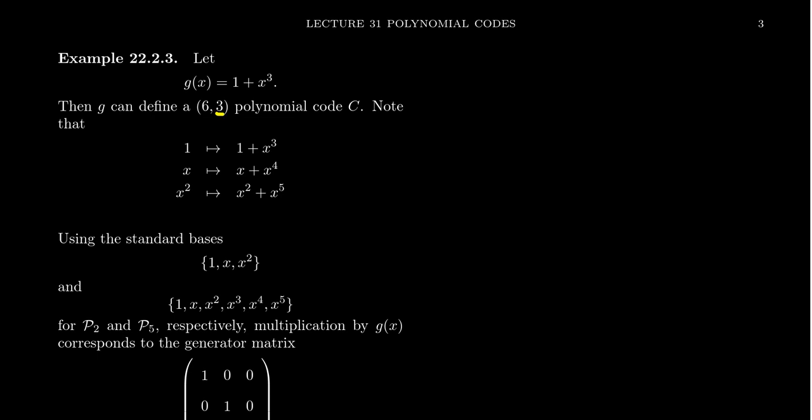So we take a 3-bit message. So typically our vectors would look something like you have something here, a0, a1, a2. We can identify that with the polynomial a0 plus a1*x plus a2*x^2.